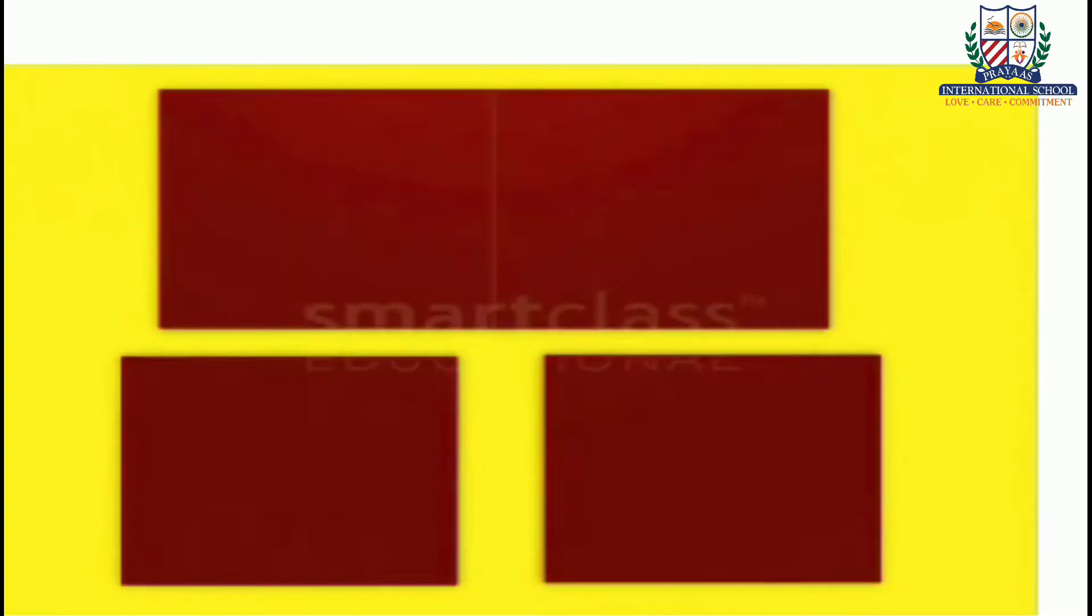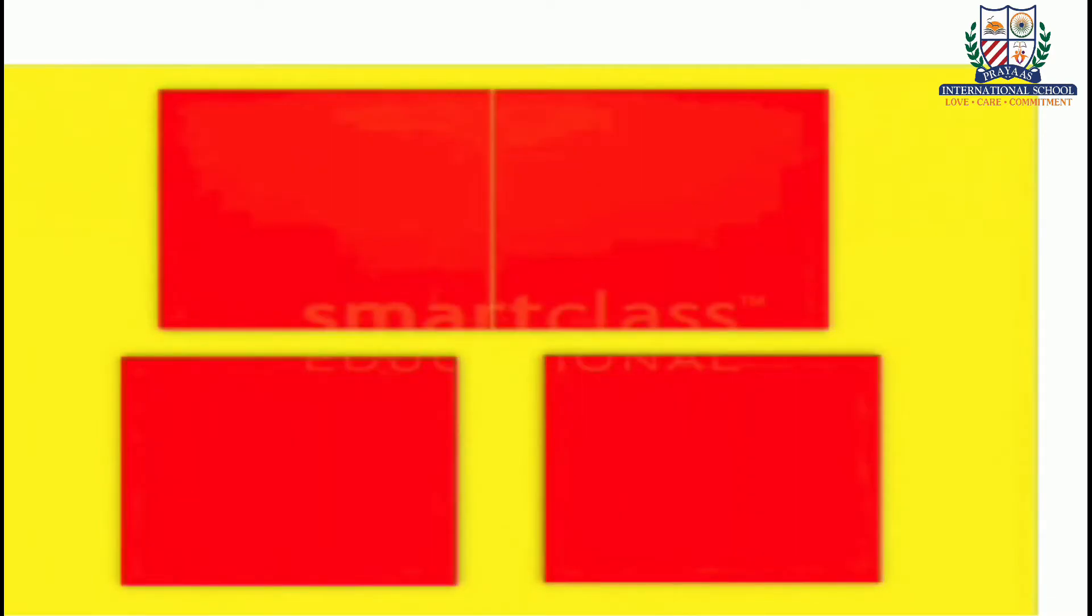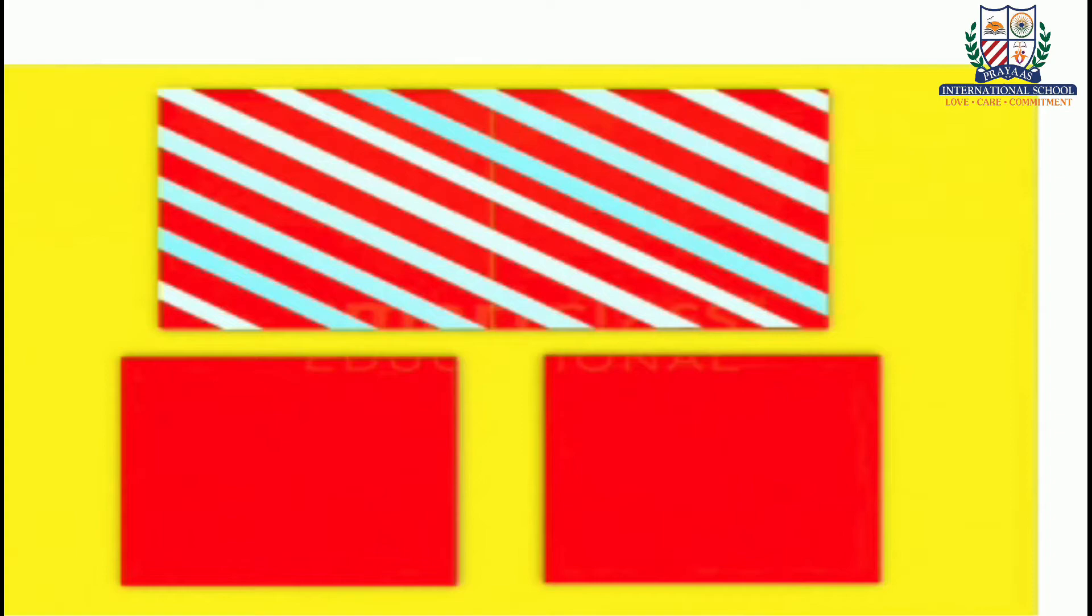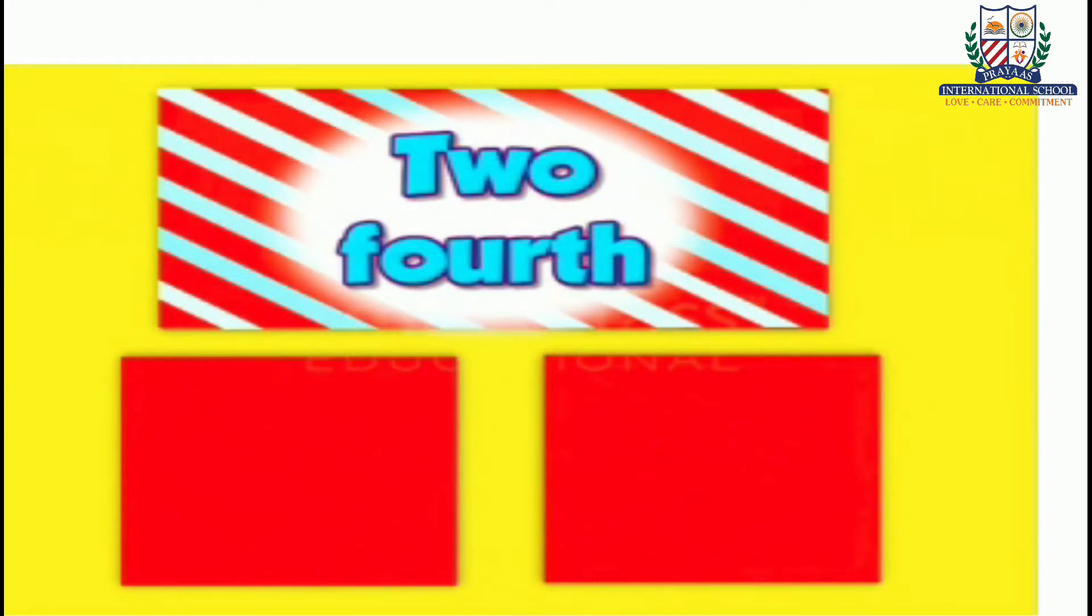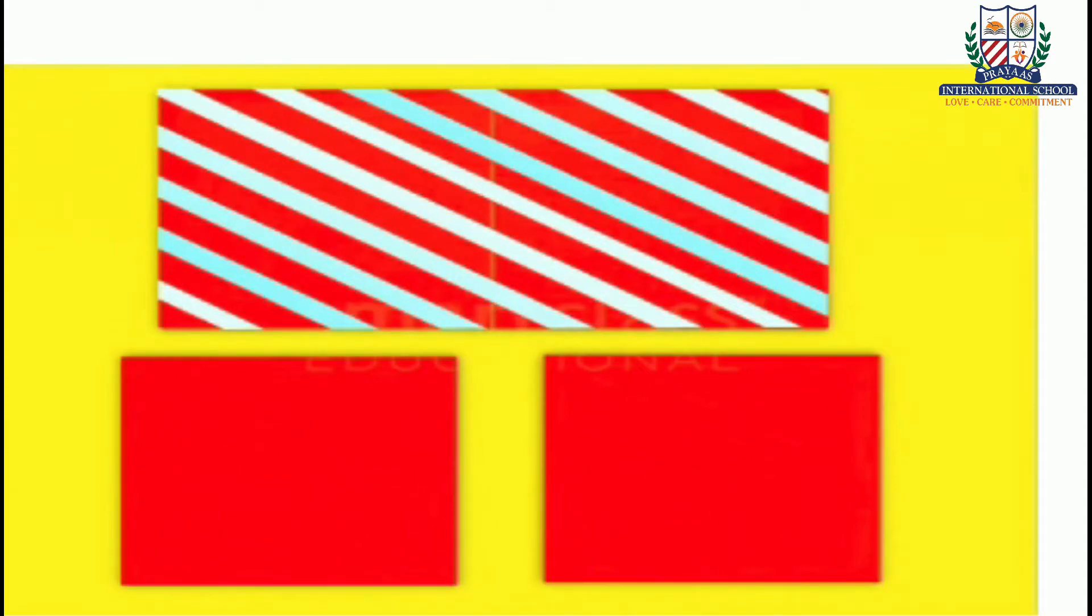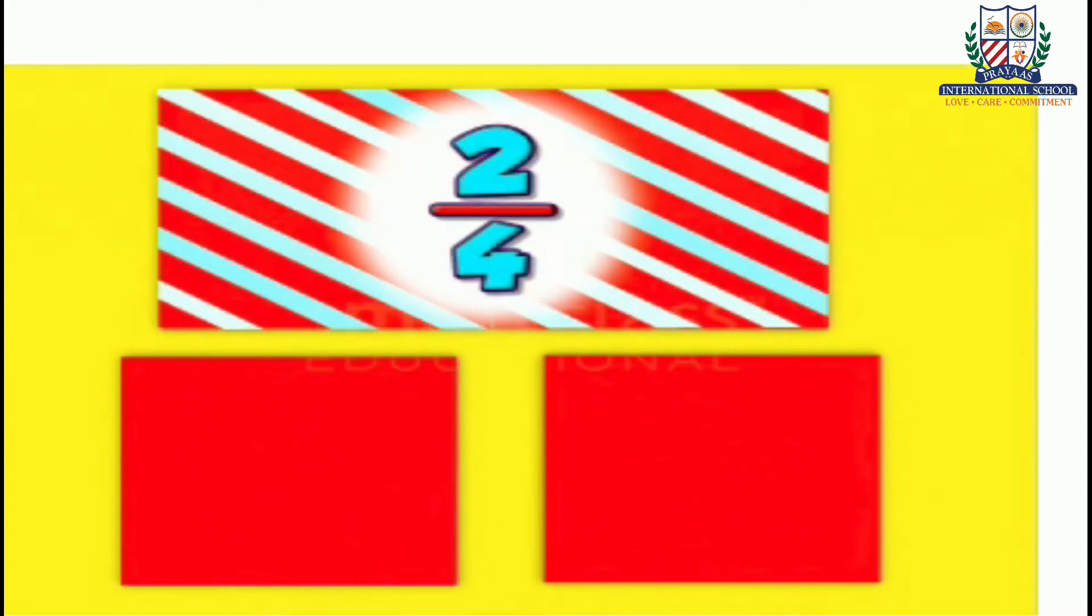In the same way, two parts out of four equal parts of a sheet of paper is called two fourth of a whole. We write it as two by four.